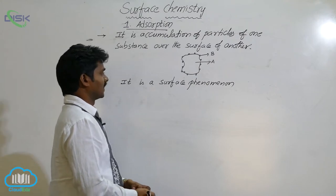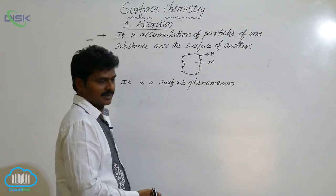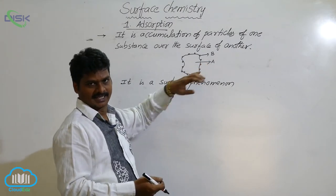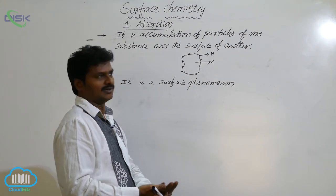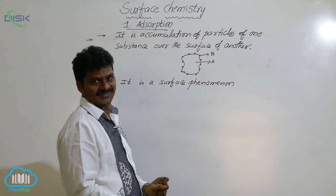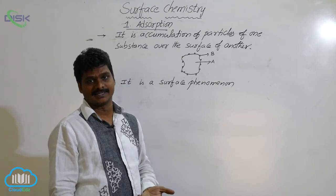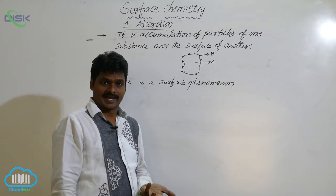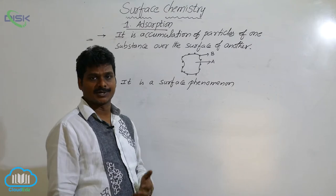In adsorption, there are two components involved. One is the surface-providing substance and the other is the surface-reaching substance. The substance which provides surface for the adsorption process is called the adsorbent.